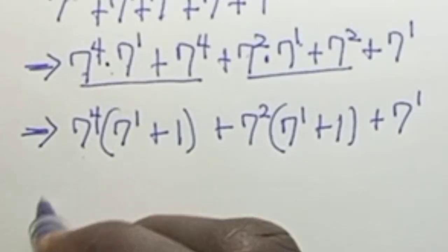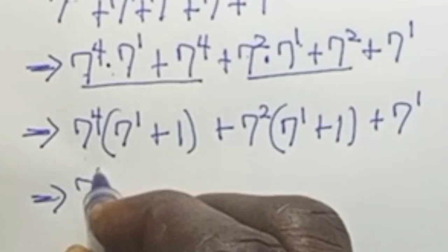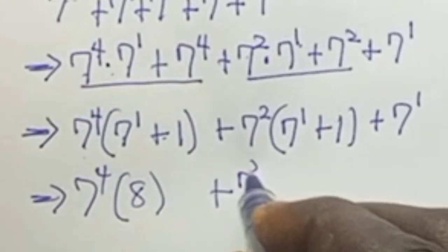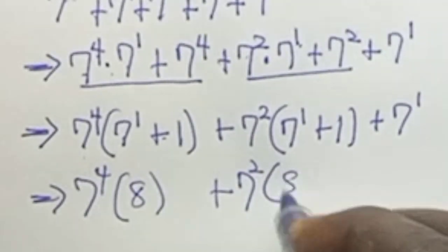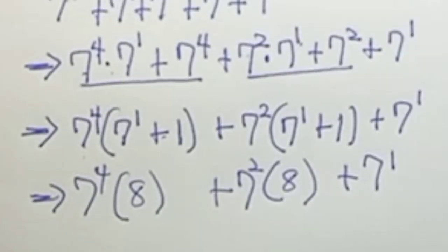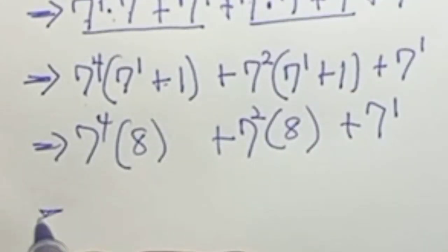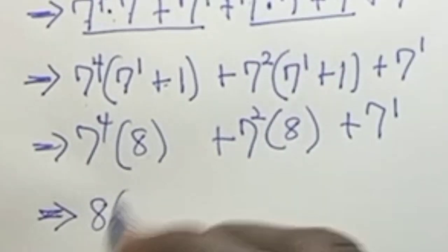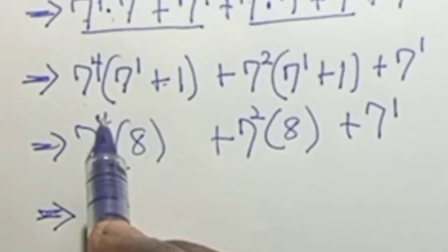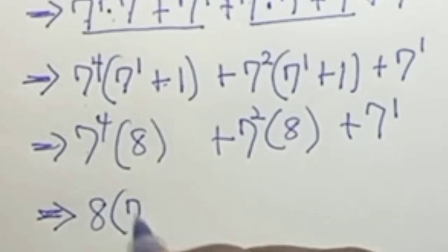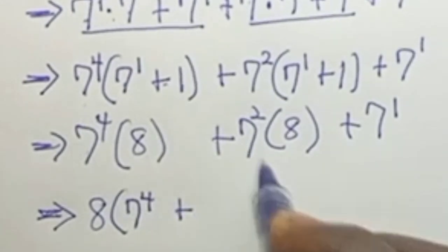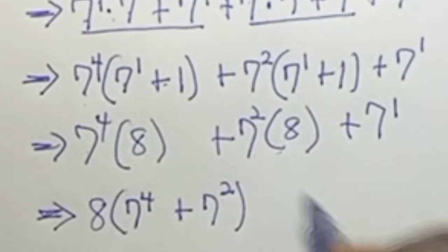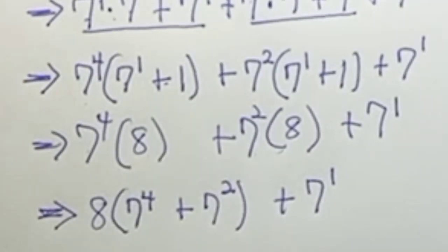In the next line we can write 7⁴ times (7 plus 1), that is 8, plus 7² times (7 plus 1), that is 8, plus 7¹. We then bring out what is common, which is 8: 8 times the quantity 7⁴ plus 7² close the bracket, plus 7 to the power of 1.